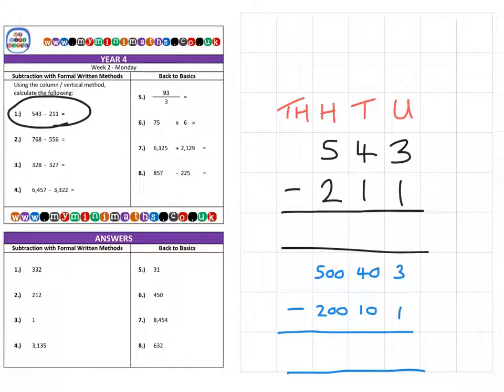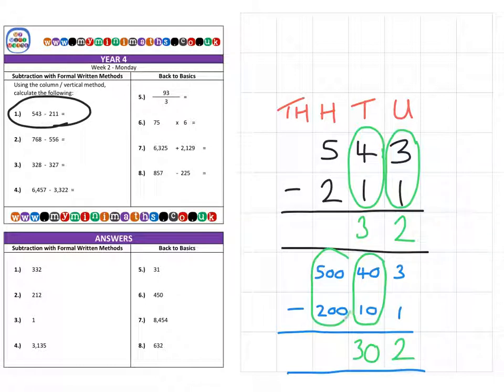So let's have a look. First of all, we have 3 units subtract 1 unit, which is 2. We have 40 minus 10, which is 30. And we have 500 minus 200, which is 300, for a final answer of 332.